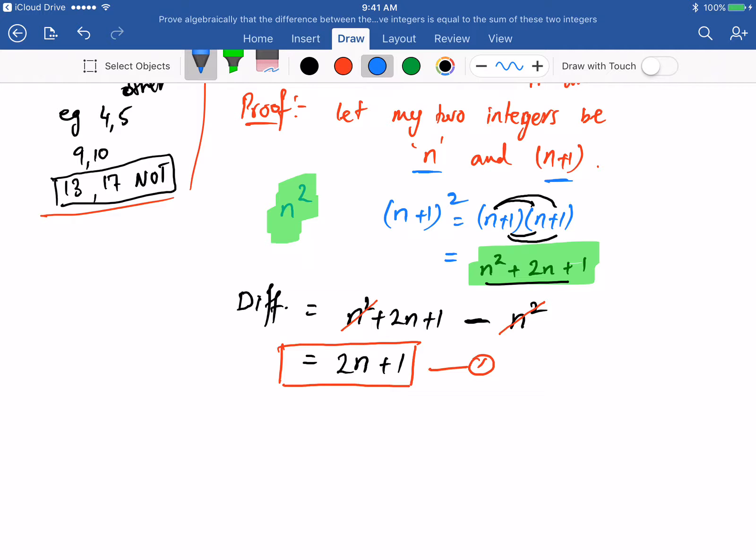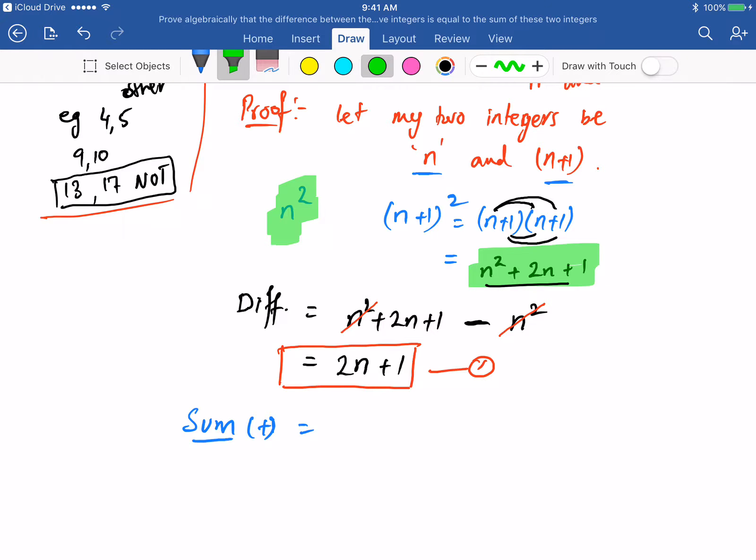So let me use a different color pen here. To work out a sum, sum means add. So I'm going to add my two integers. My two integers, as you know, were n and n plus one. So n plus n plus one. And collecting like terms, you can add n and n, which will give you two n plus one. So that is my sum. Let's call it equation two.